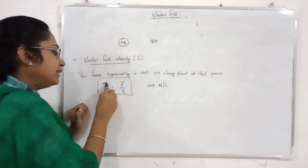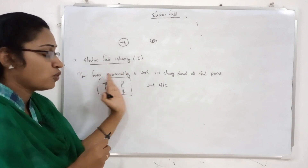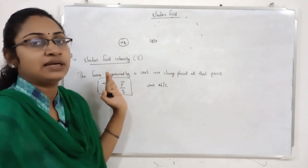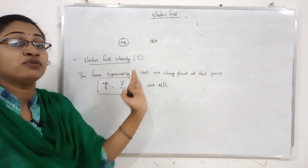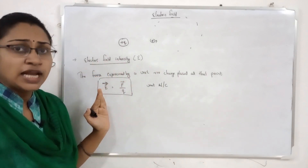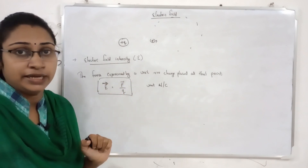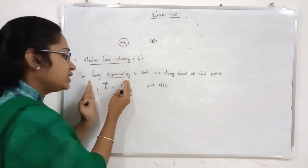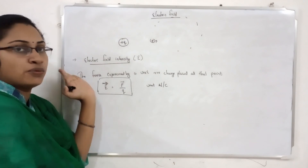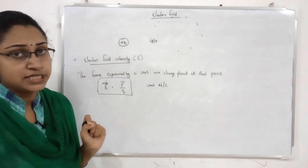Electric field intensity is a vector quantity. There is a direction — the force has a direction. In electric field intensity, the force has direction. The unit of electric field intensity is Newton per Coulomb, N/C.